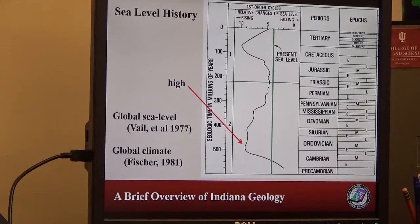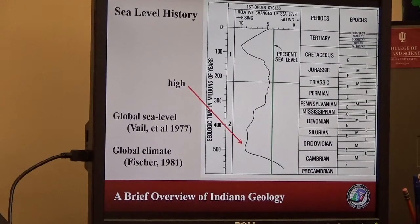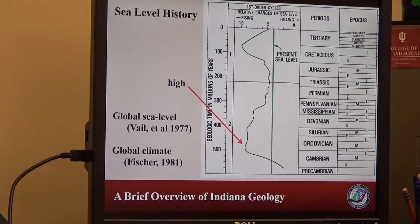It's not until we move into the Cenozoic era that we start getting glaciers moving in from Canada, due to a much cooler climate, that we start getting sediments deposited again. That's the basis for our sand and gravel operations that we have now, and our very flat topography — until you get down to south central Indiana where the glaciers did not progress any further. The glaciers did loop around to the west and to the east, going a little bit further south in those regions.